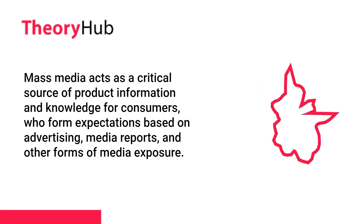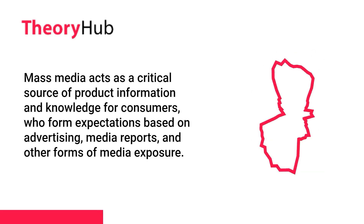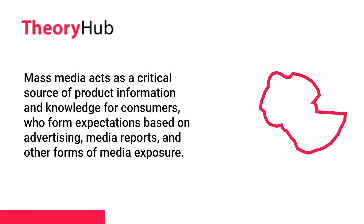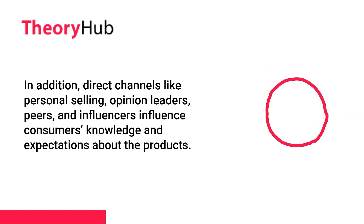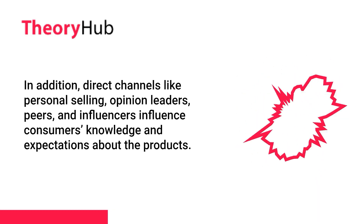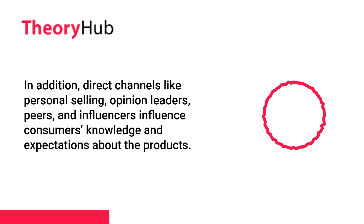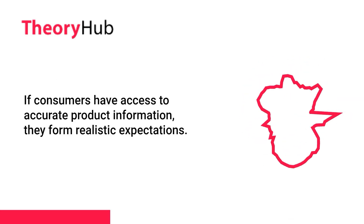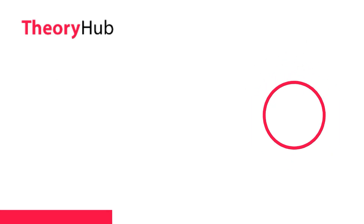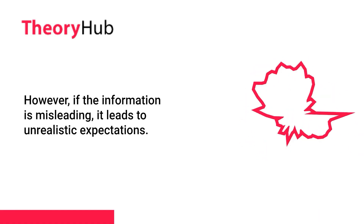Mass media acts as a critical source of product information and knowledge for consumers, who form expectations based on advertising, media reports, and other forms of media exposure. In addition, direct channels like personal selling, opinion leaders, consumer peers, and influencers influence consumers' knowledge and expectations about products. If consumers have access to accurate product information, they form realistic expectations. However, if the information is misleading, it leads to unrealistic expectations.